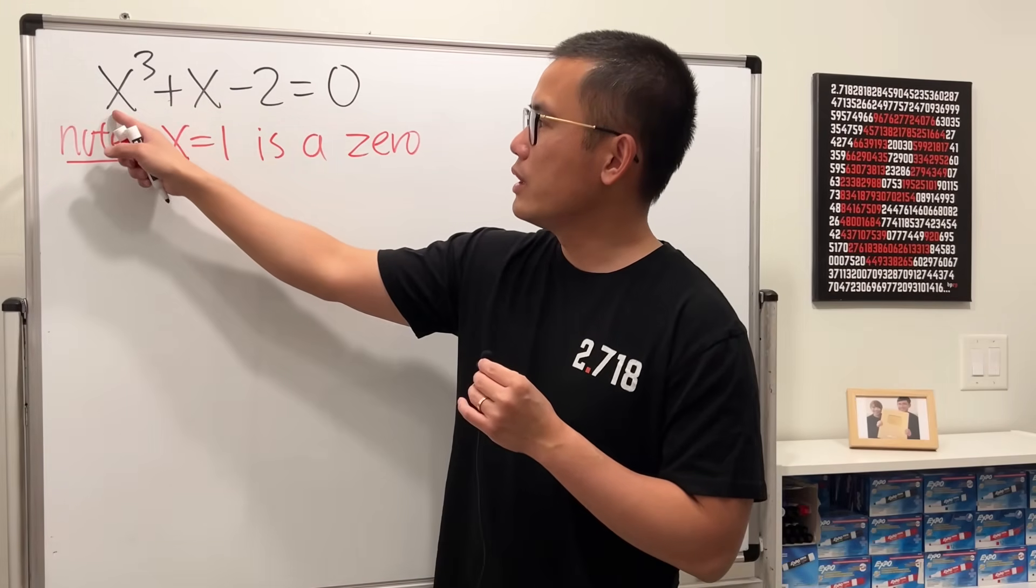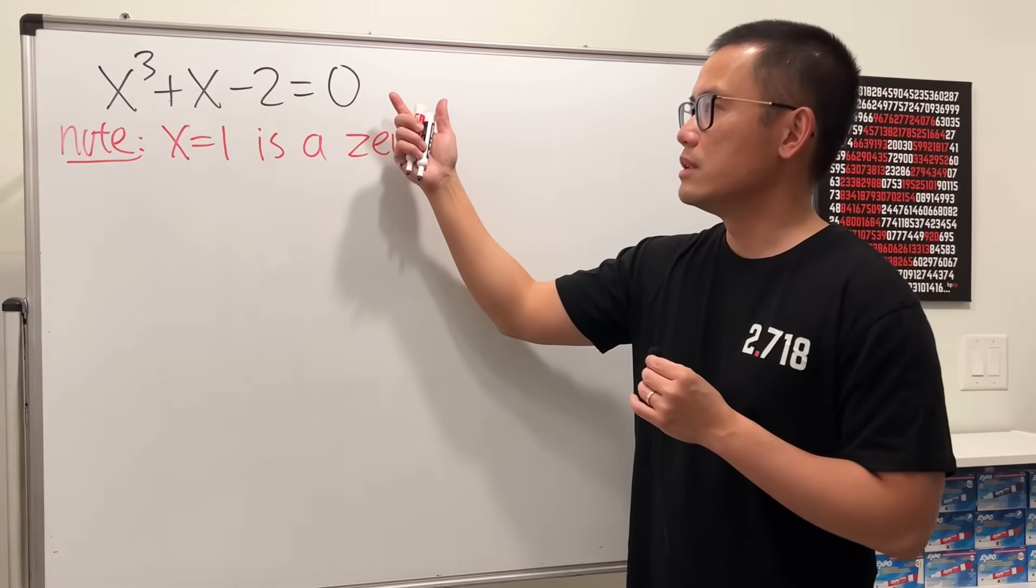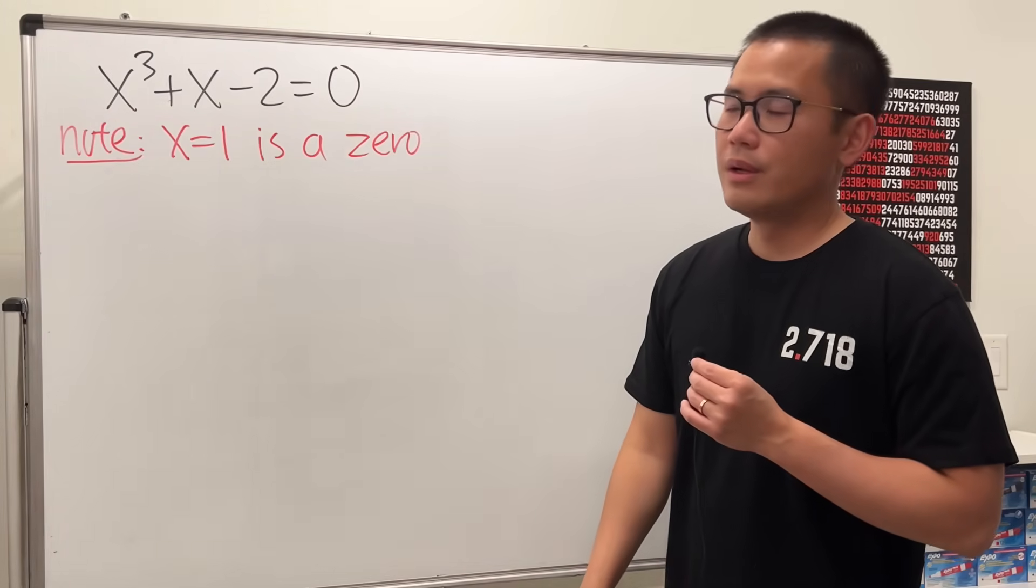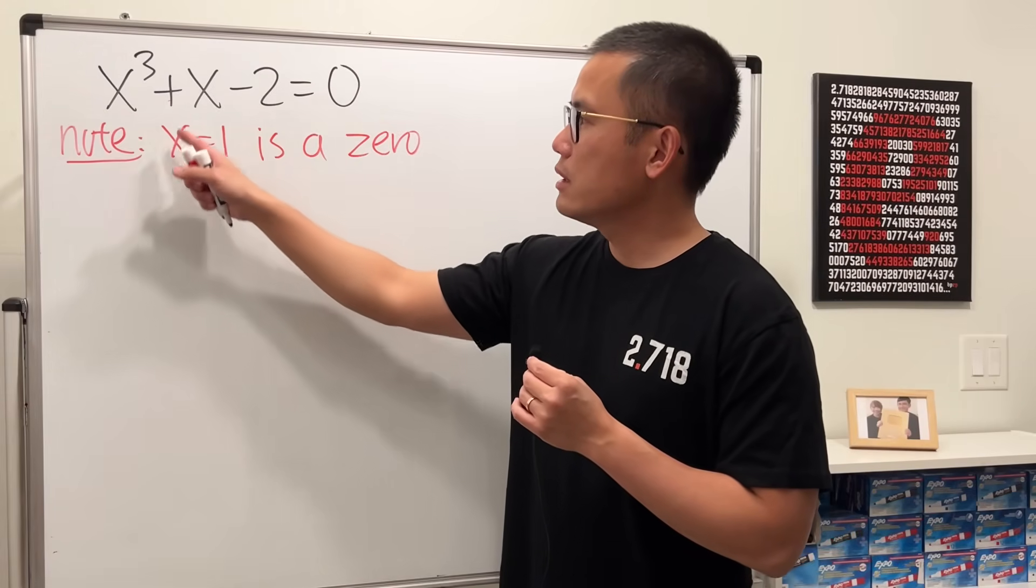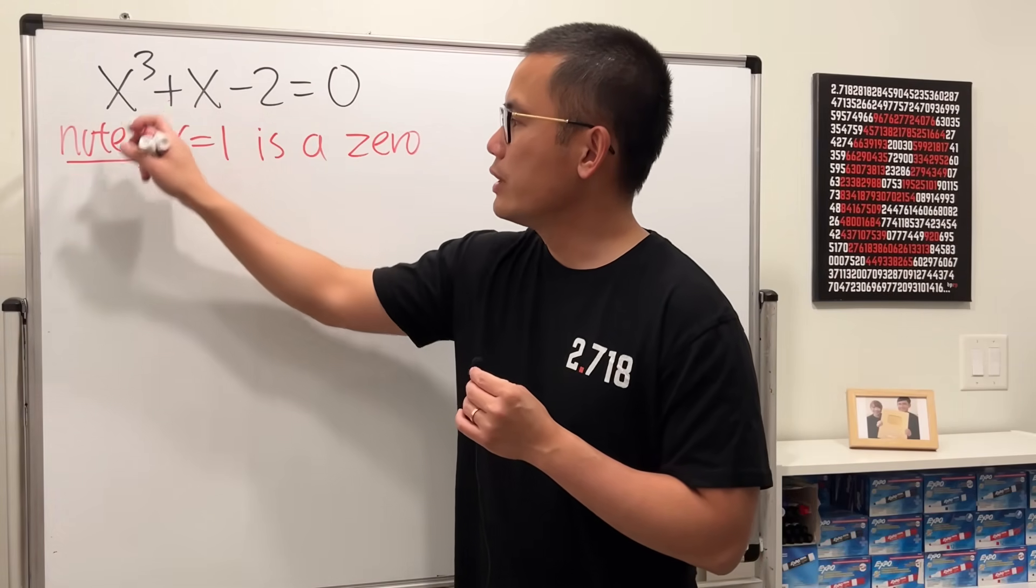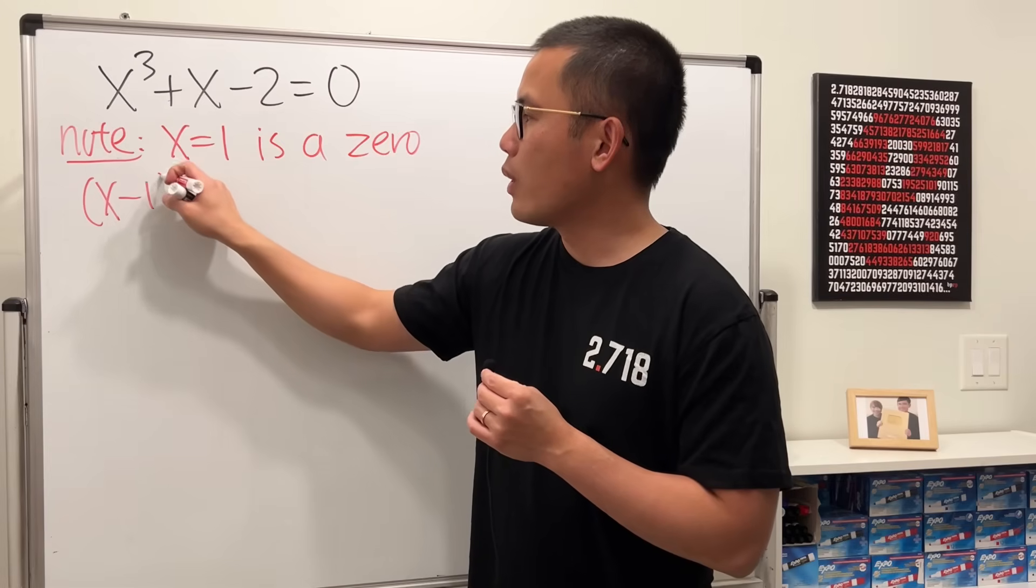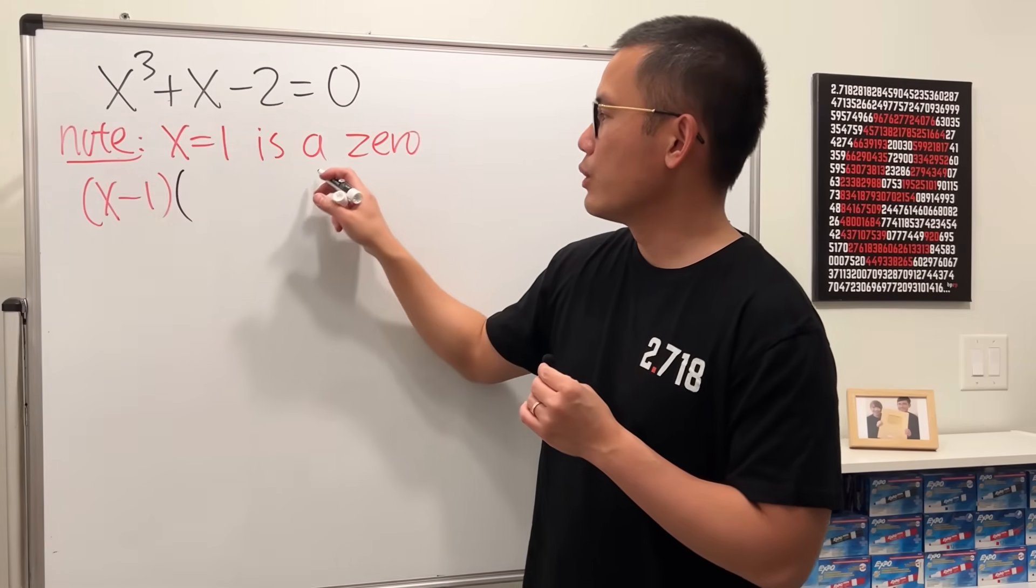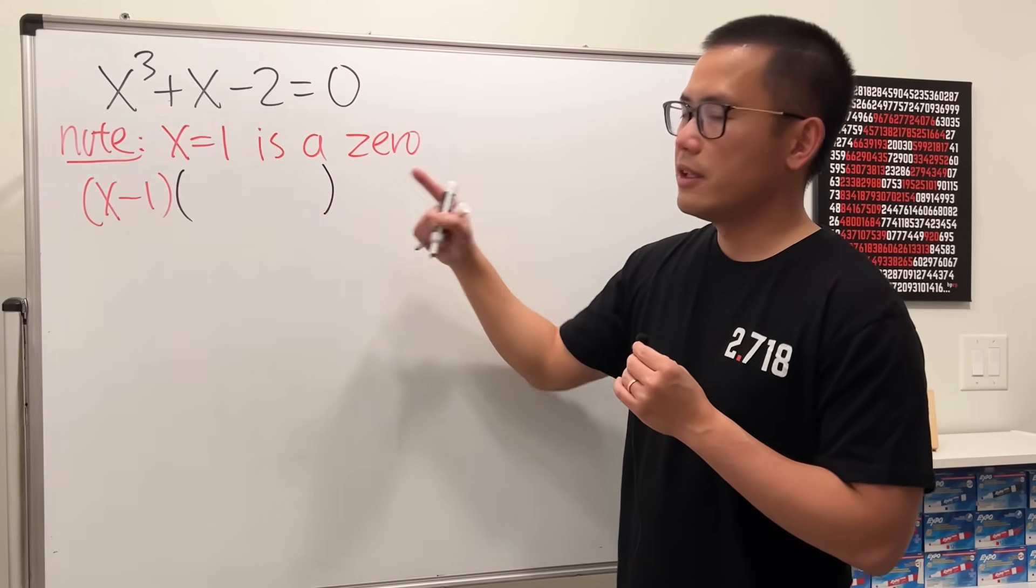Meaning when you plug in 1 into here, you end up with zero. So what does that mean? Whenever you know an answer to the equation, when you subtract 1 from both sides, we can say x minus 1 is a factor of this thing. And then right here we can just go ahead and figure out what the remaining factor is going to be.